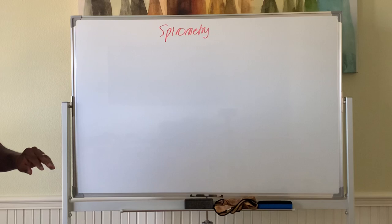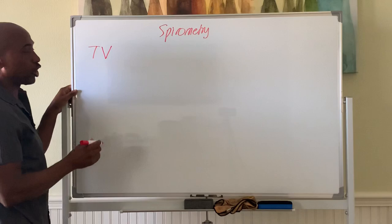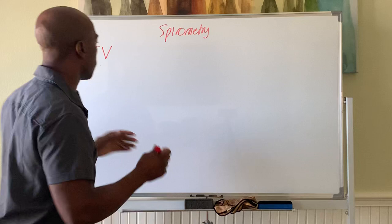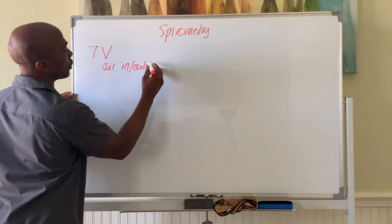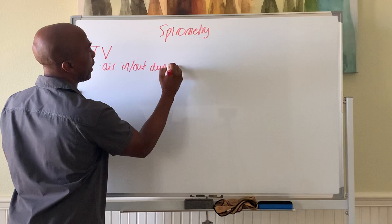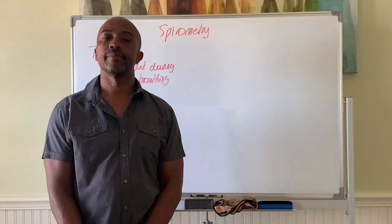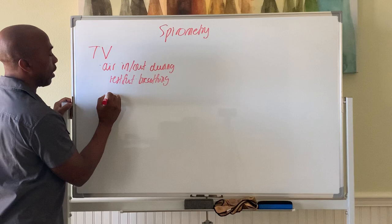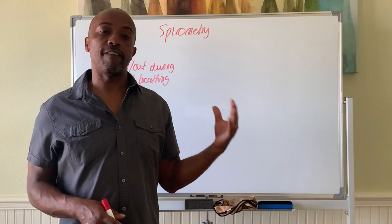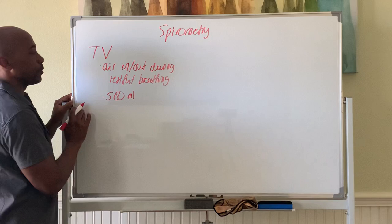Let's begin with defining some terms. There's something called your tidal volume. Tidal volume is the amount of air you move in and out of the lungs with each breath during quiet breathing — air in and out during restful or quiet breathing. The TV is around 500 mLs. Each breath we take or push out is about 500 mLs. That's called your tidal volume, and that's the same for both males and females.